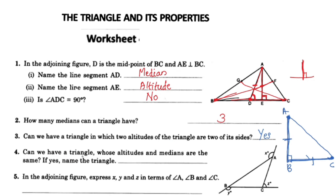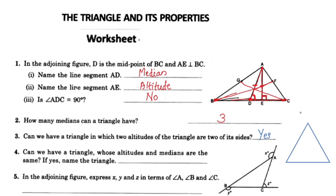Can we have a triangle whose altitude and median are the same? The median connects a vertex to the midpoint of the opposite side. The altitude is perpendicular to the opposite side. For them to be the same, consider triangle A, B, C with its midpoint D.